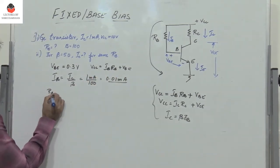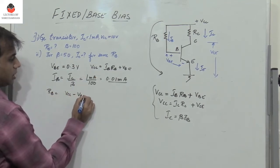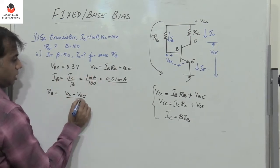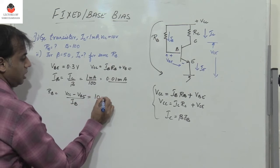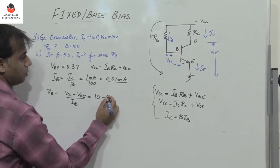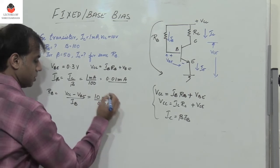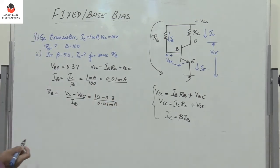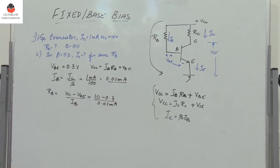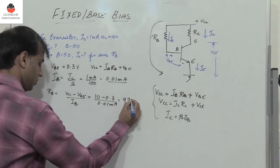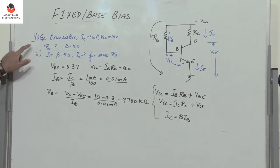Therefore, RB equals VCC minus VBE divided by IB. Substituting: 10 minus 0.3 divided by 0.01 milliampere. That gives 9.7 divided by 0.01 milliampere, resulting in RB equal to 970 kilo ohms. This completes the first part.